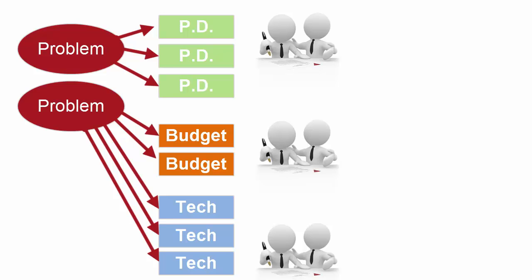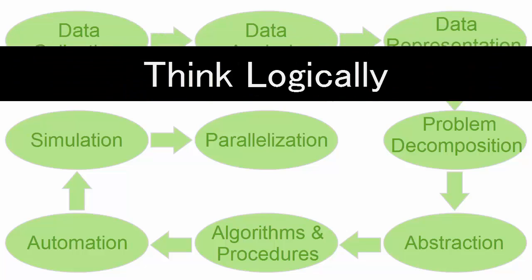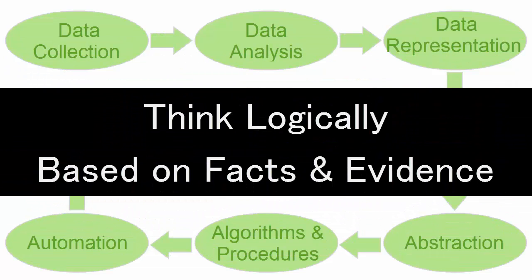So that's what computational thinking is about. If you have a scientific mind, it will come natural to you. Well, the bottom line is, in the simplest way, it is to think logically based on the facts and evidence.